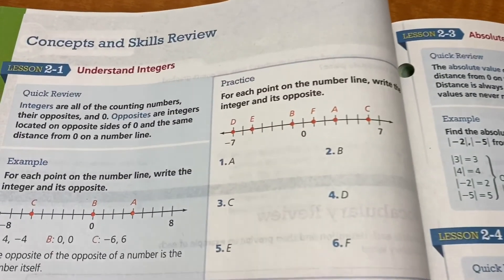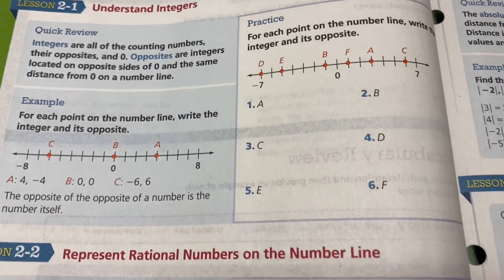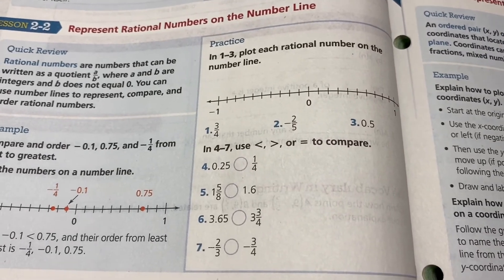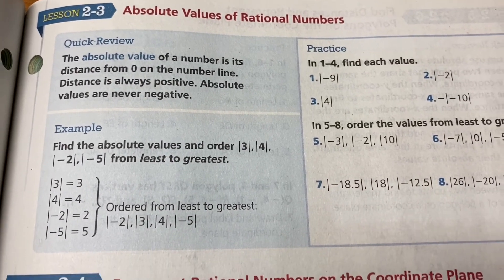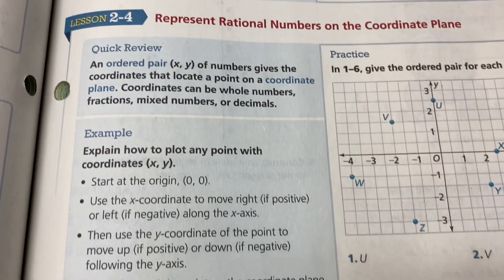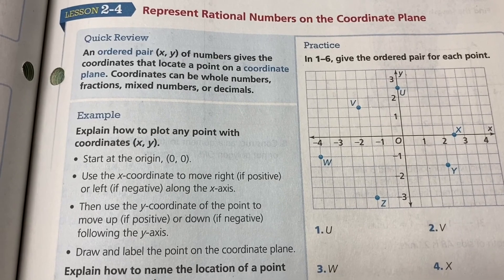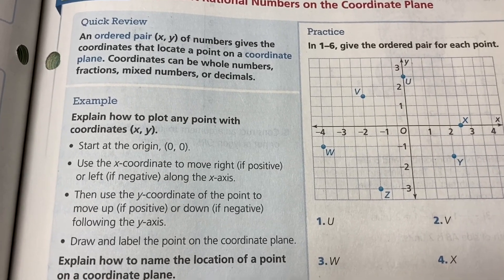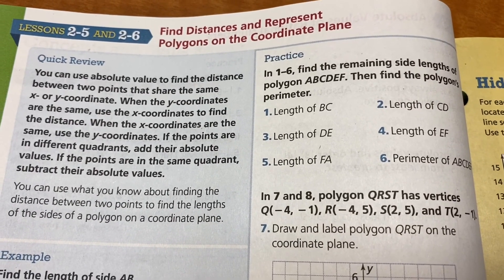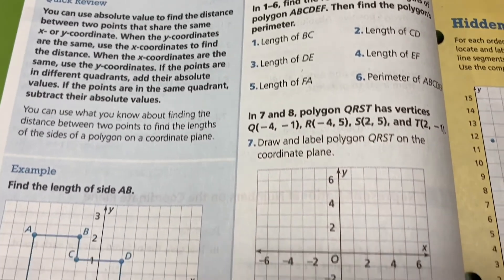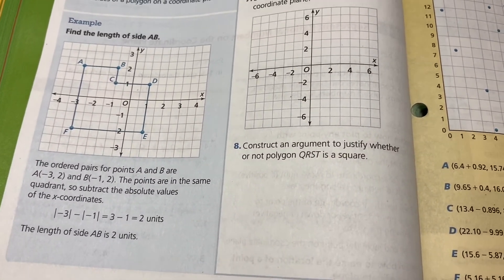And now we're on topic two. You're going to understand integers — positive and negative whole numbers. You're going to find the absolute value of rational numbers. You're going to represent rational numbers on the coordinate plane. We're going to use those absolute values to find the distance and represent polygons on the coordinate plane.